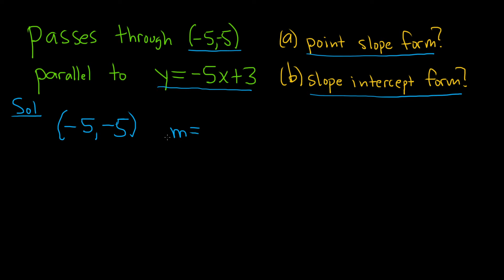We're told that our line is parallel to this line. Parallel lines have the same slope. If you look at this line, it's already in slope-intercept form, in the form mx plus b. So by matching you see that m is equal to negative 5. Because parallel lines have the same slope and our line is parallel, the slope here is negative 5, so our slope must also be negative 5.